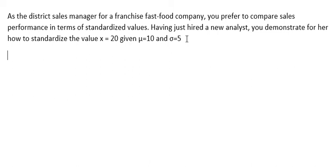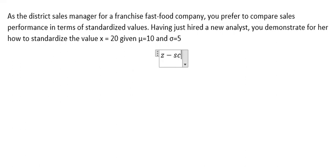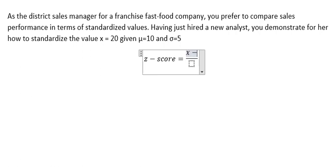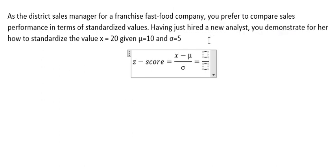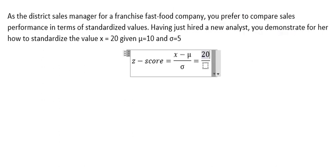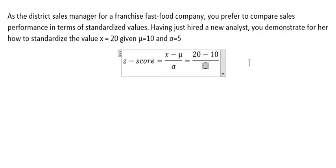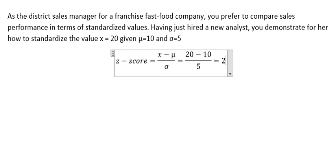In this situation we will use the z-score formula. The formula is: z equals x minus µ over σ. Applying this formula, we have 20 minus 10 divided by 5, and you get 2. This is the answer.